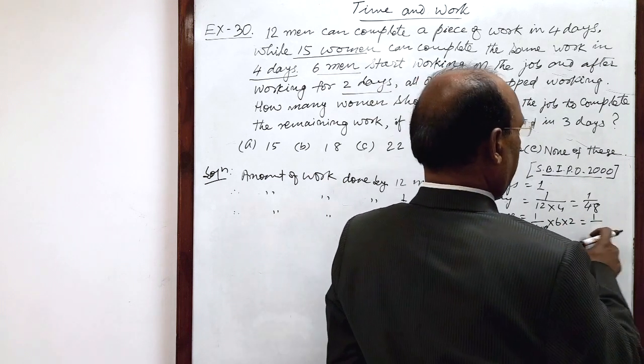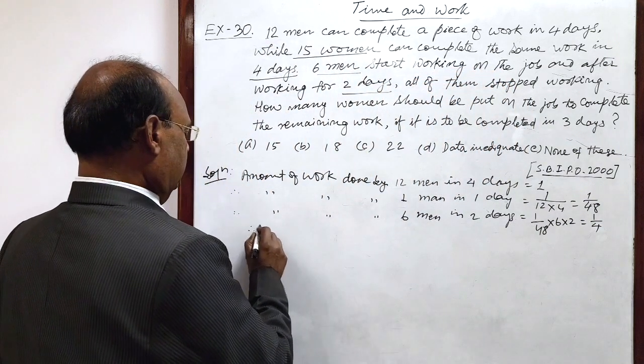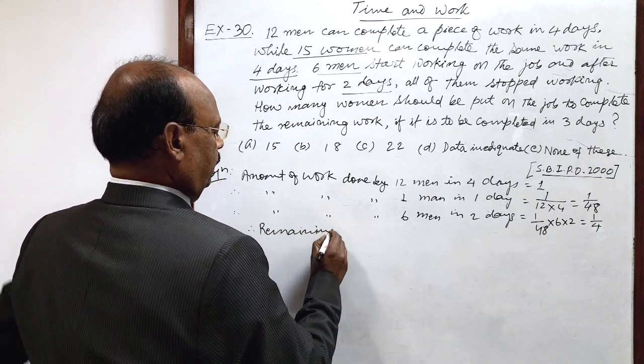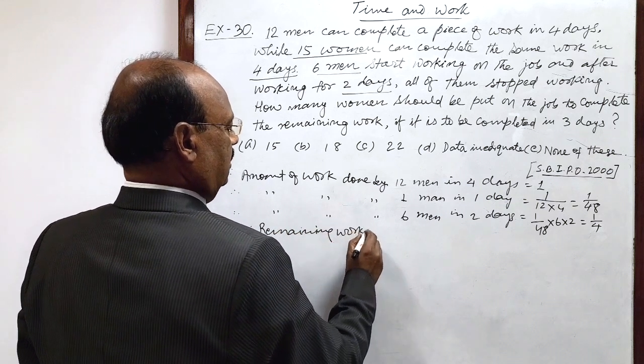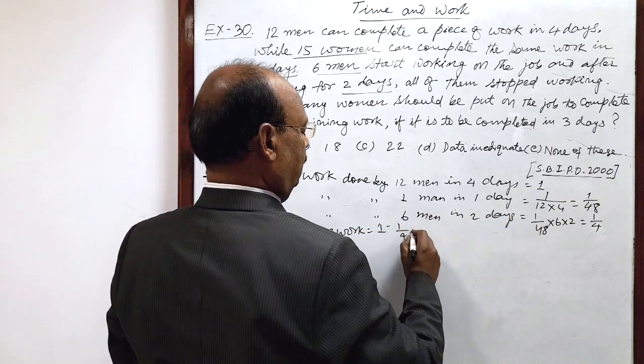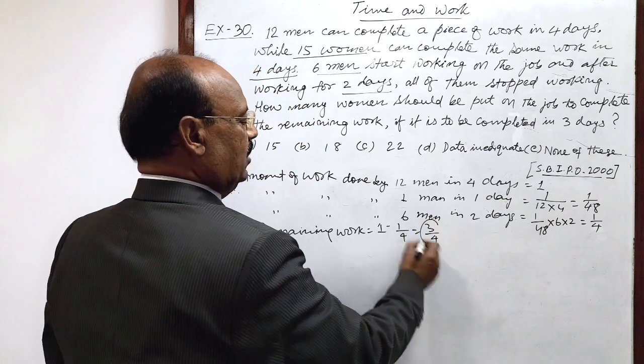Let us find out the remaining work. Therefore, remaining work is one complete work minus work done: 1 minus 1 by 4 equals 3 by 4. This much amount of work is left, which has to be done by women in 3 days.